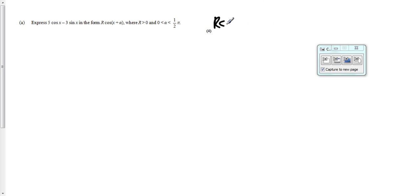Over to the right here we need to expand it. So Rcos(x + α) will be equal to, if we use the formula sheet, this expands to cos(x)cos(α). The sine changes whenever you're expanding cos(a + b), so we minus Rsin(x)sin(α).